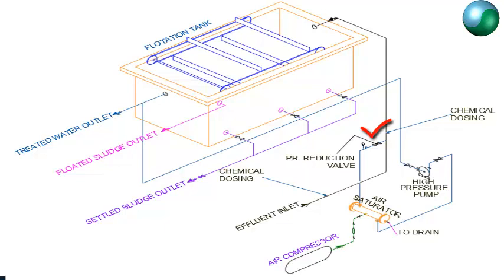Chemical dosing systems are generally required in DAF systems. Different coagulants and flocculants are dosed in the effluent to get the bigger flocs of suspended particles. These flocs attach more easily with air bubbles and rise more easily to the surface of water.